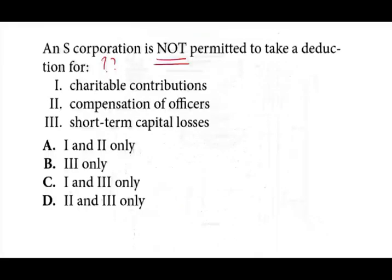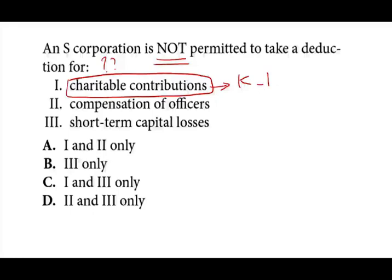Let's look at the answers. Charitable contributions — the answer is no, they are not deductible at the S corp level. They flow through to the shareholders on form K-1. So charitable contributions are not permitted as a deduction, making option one correct. I can eliminate B and D because one is not there. Compensation of officers is deductible, so that cannot be part of my answer. By process of elimination, I'm left with C — short-term capital losses. Capital losses and capital gains flow through as separately stated items on K-1 to the shareholders. Therefore, the answer is C.